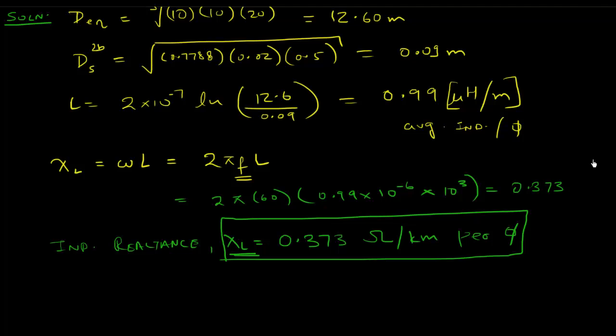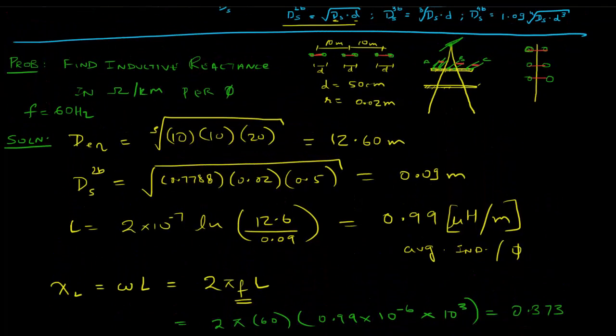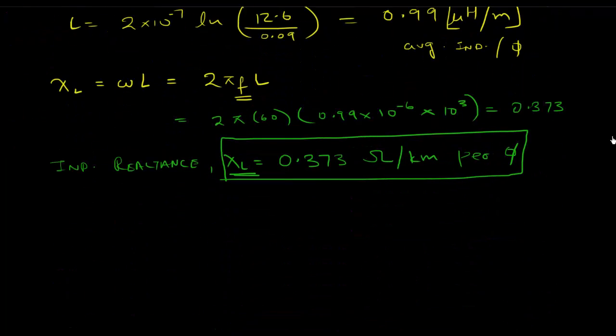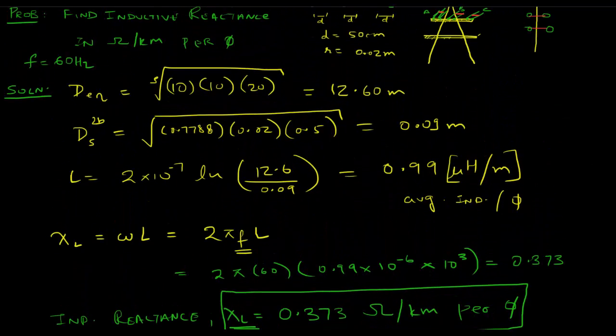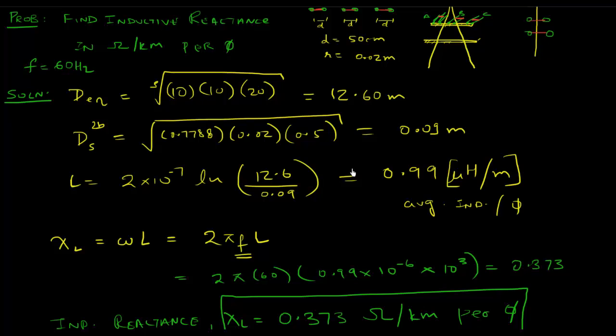So our inductive reactance for this line, XL, is equal to 0.373 ohms per kilometer per phase. This is an important value. XL is what we practically use, just like resistance. This is the inductive reactance for that line.